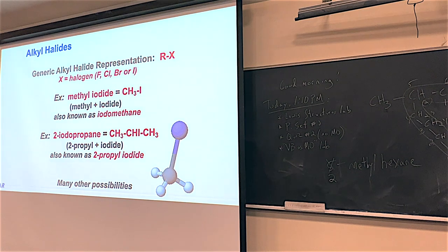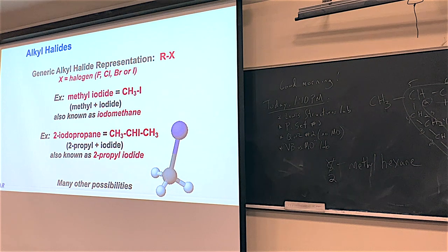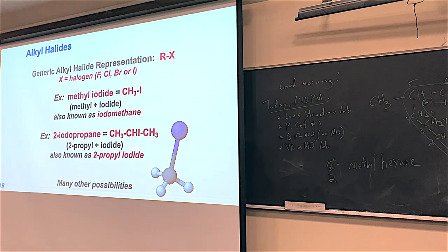You can have all kinds of possibilities. This one has the iodine on the second carbon of a three-carbon chain. Three carbons is propane. Because it's an iodine off the second one, 2-iodopropane is the name. Sometimes people refer to this as 2-propyl iodide because the propyl group is three carbons and the iodine is off the second one. Just remember these things have two names. The possibilities are pretty limitless.